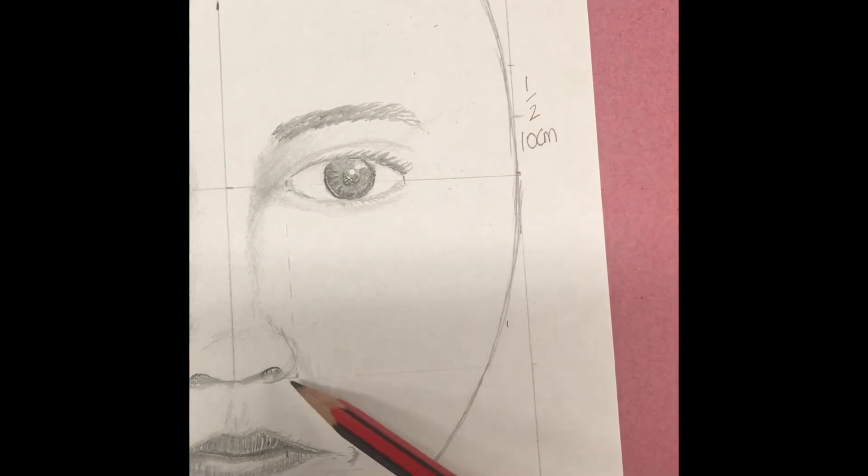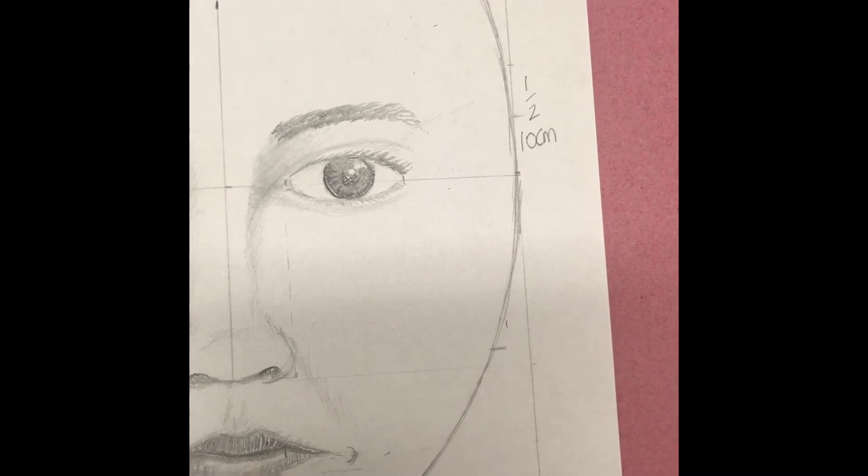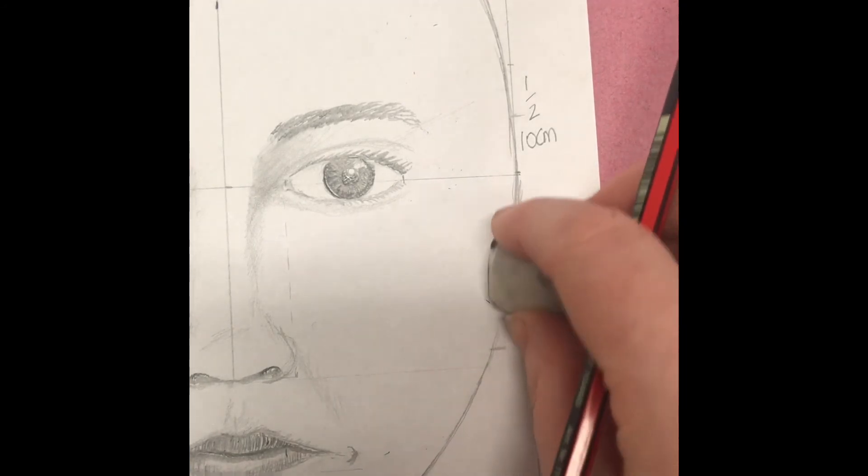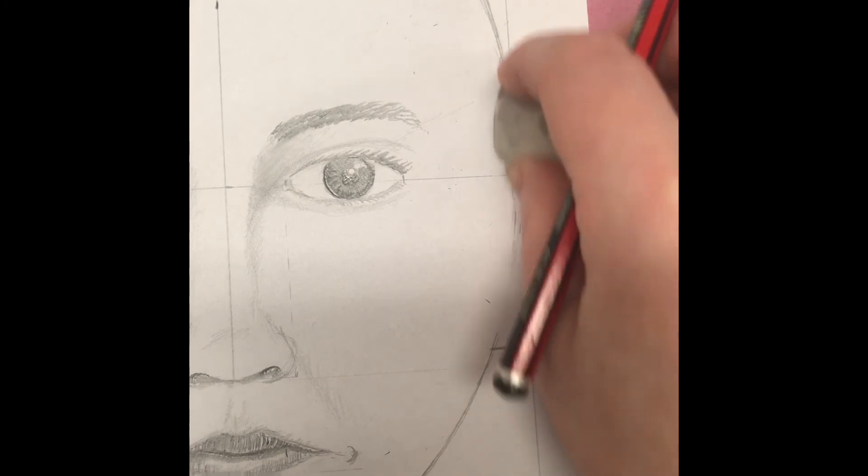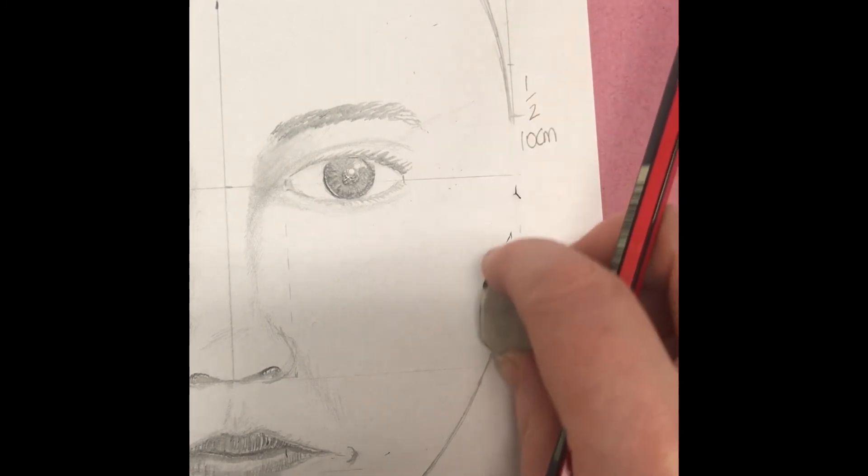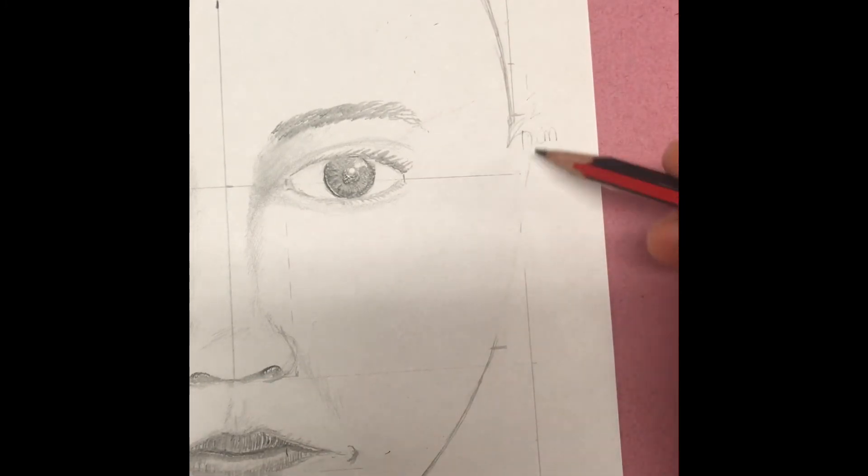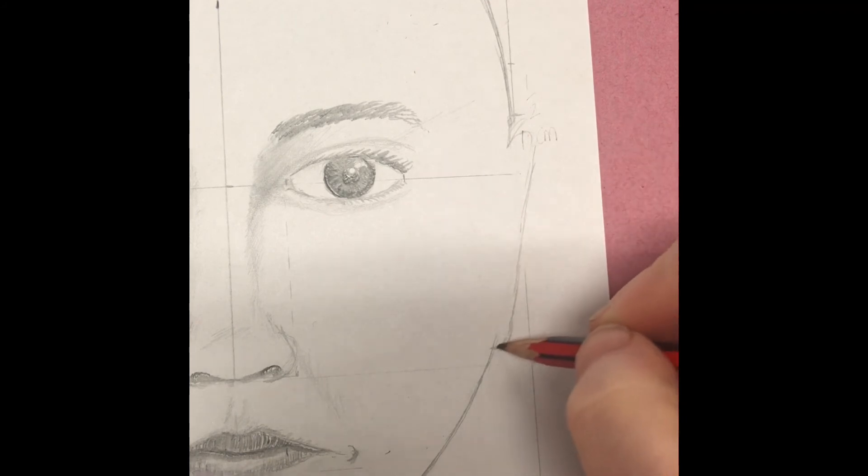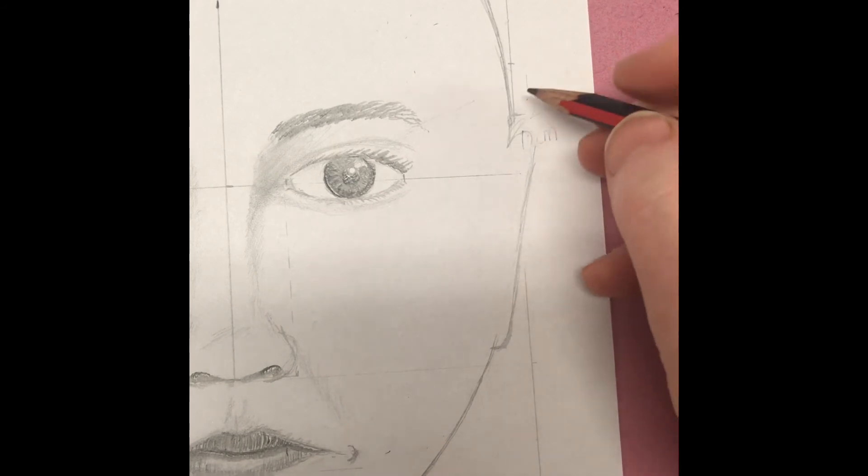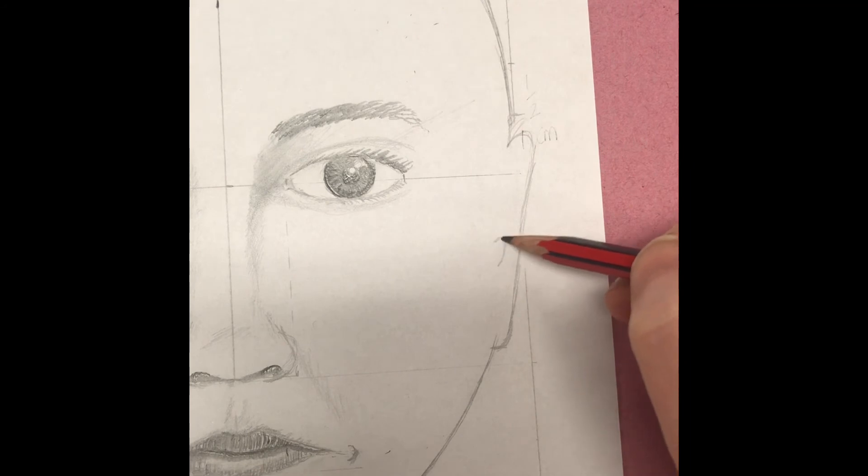The ear reaches from approximately the eyebrow down to the nose. Make two marks where the ear should be and then rub out the line on the side of the face. The ear should follow the shape of the face and should not stick out too far. Add details and shadows into the ear.